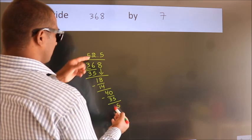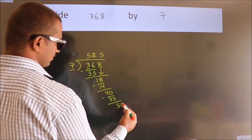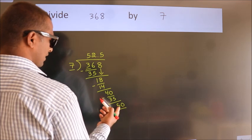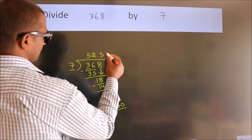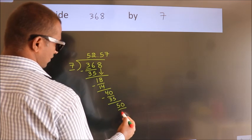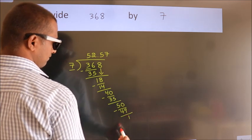After this, we already have the decimal, so directly take 0. So 50. A number close to 50 in the 7 table is 7 sevens, 49. Now we subtract. We get 1.